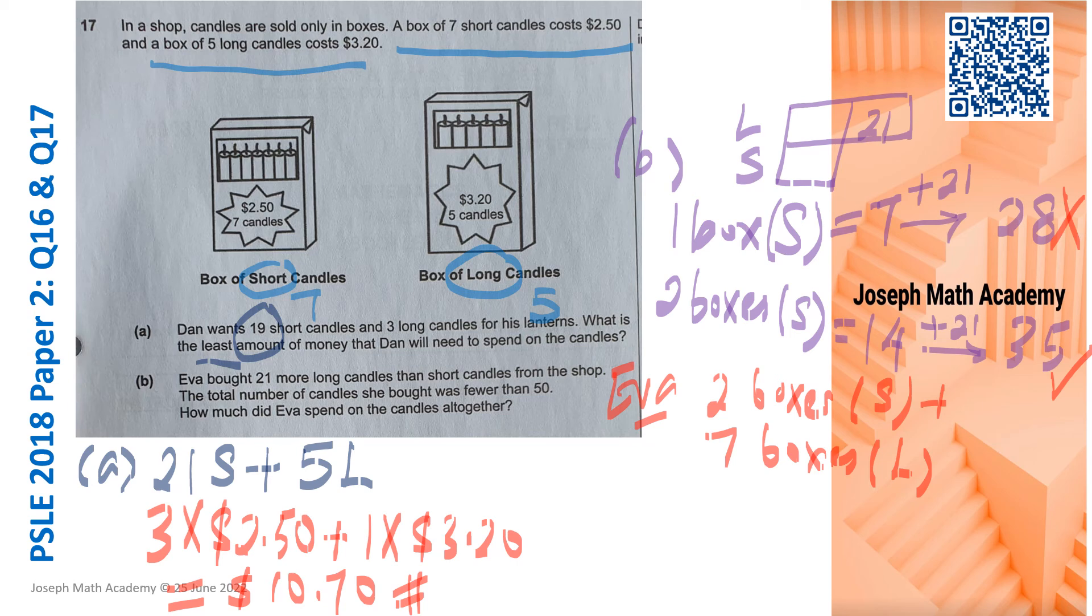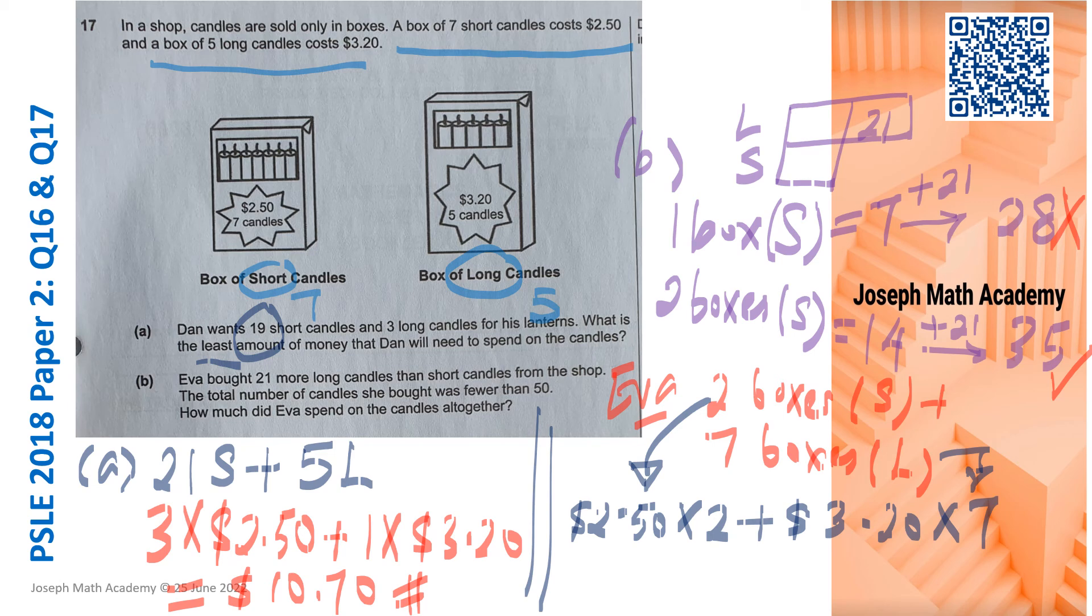Let's find out how much she has to pay. So for the two boxes of short candles, is 2.50 a box. Two boxes means times two. Now, then for the long candles, it is 3.20 a box and she has to buy seven. So if you add up all this, 2.50 times two, that gives us $5. And 3.20 times seven, that gives us $22.40. If you add up these two amounts, she should pay $27.40 in order to get 21 more long candles than short candles. So part B is done.